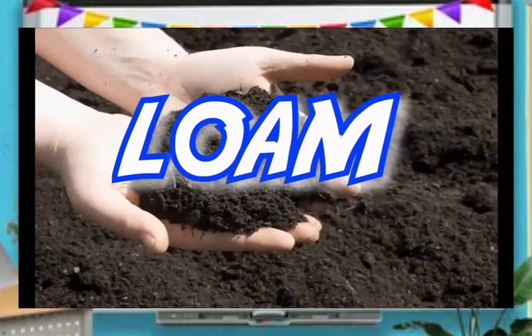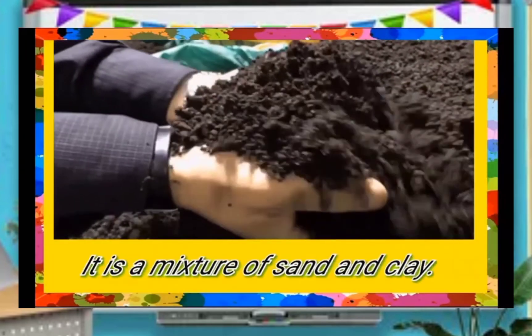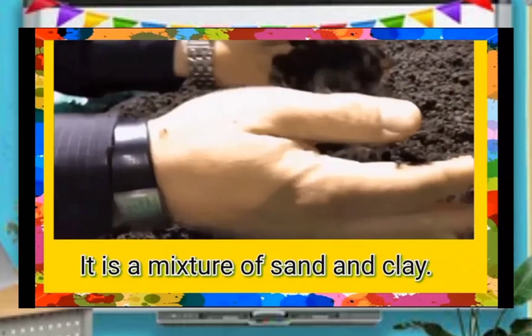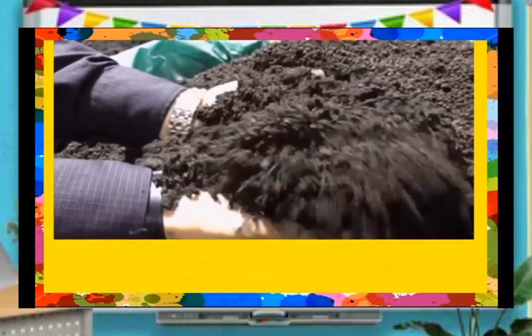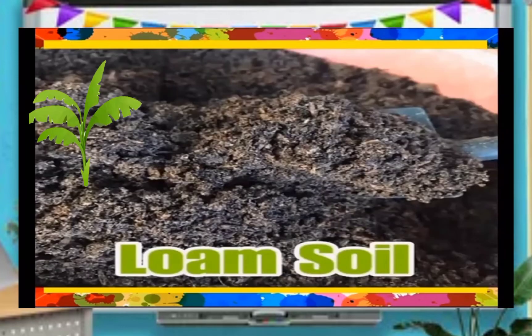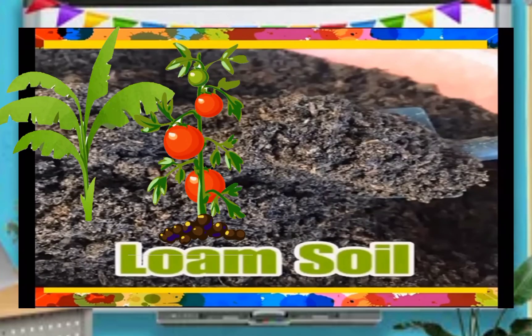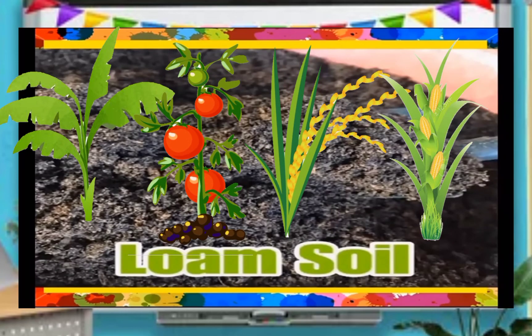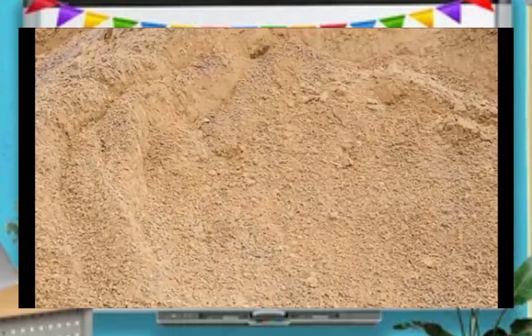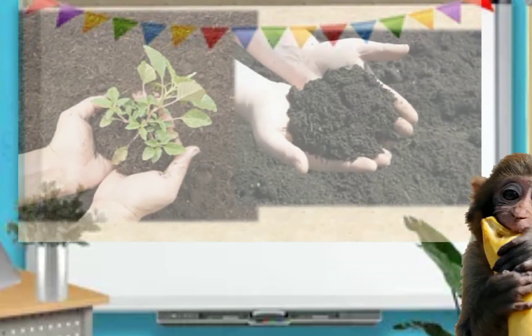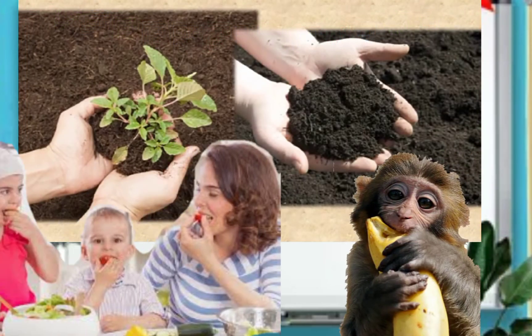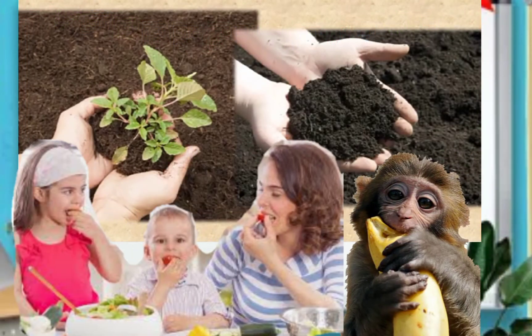Number two is loam soil. It's a mixture of sand and clay. It is used for planting crops. Crops is the food source for both animals and people.